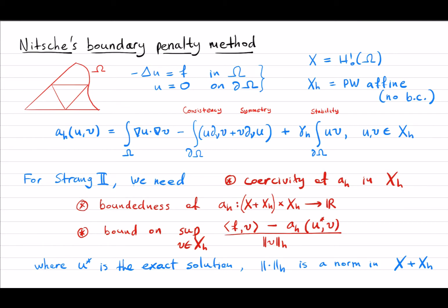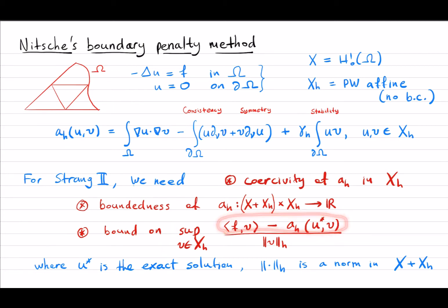In order to apply Strang's second lemma, we need coercivity of the bilinear form in the discrete space X_h — with the coercivity constant independent of h — and we need boundedness of the bilinear form. Not only in X_h cross X_h, but actually on X plus X_h, meaning functions of the form some H^1_0 function plus some piecewise affine function. The last condition is a good bound on the consistency term. We also need to choose some appropriate norm on this space X plus X_h.